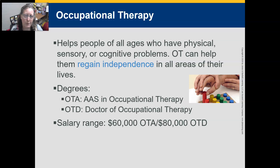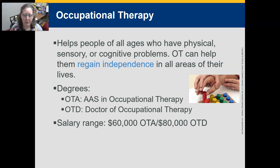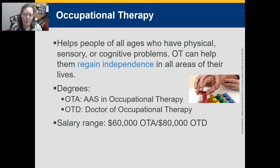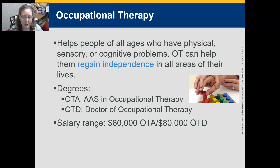Occupational therapy helps people of all ages who have physical, sensory, or cognitive problems. OTs help them regain independence in all areas of their lives — the primary goal is helping people live a full life despite their limiting challenges. There are two degree levels: an associate's to become an OTA (occupational therapy assistant), and a Doctorate of Occupational Therapy (OTD), which typically requires a prior bachelor's in health sciences. The salary range is about $60,000 for OTAs and $80,000 for OTDs.